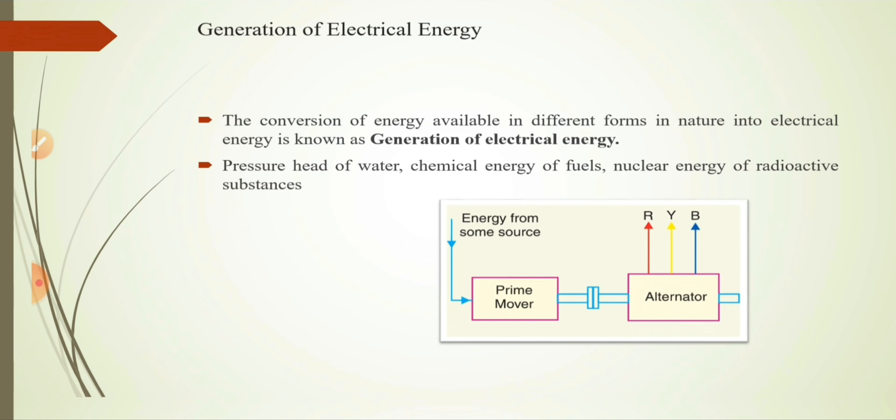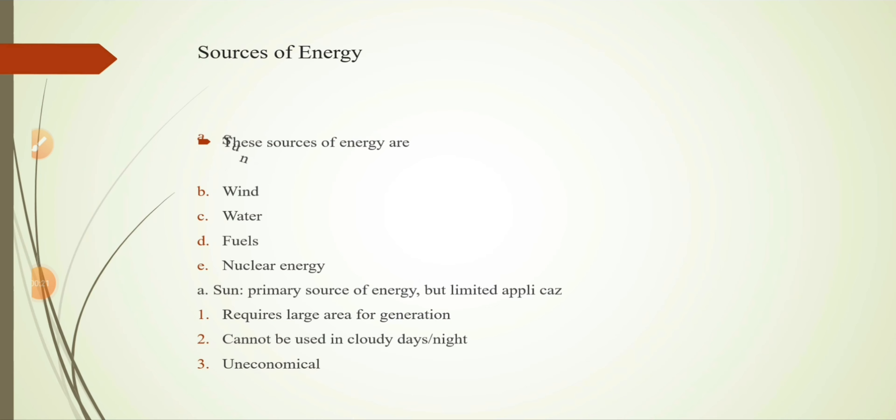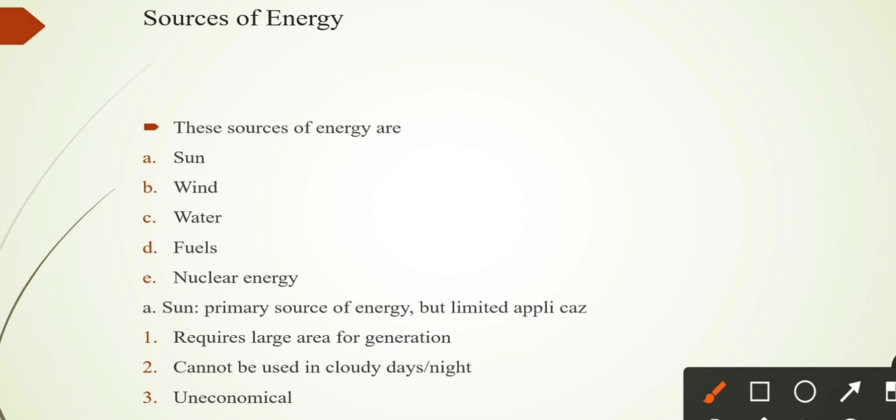As we have said, energy is available in different forms in nature. Now we would like to look into the different sources of energy, which are: sun, wind, water, fuel, and nuclear energy. Let's start with the first source of energy which is sun. Nature has done us great mercy by providing us different sources of energy. One of them is sun, which is the primary source of energy. The heat energy radiated by sun can be focused over a small area of reflectors which then can be used to raise steam and electrical energy can be produced with the help of turbine alternator combination. However, this source of energy has got some limitations which are: it requires large area for generation, cannot be used in cloudy days or night, and overall it's uneconomical.